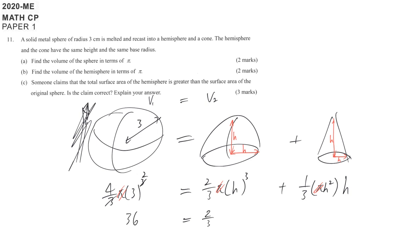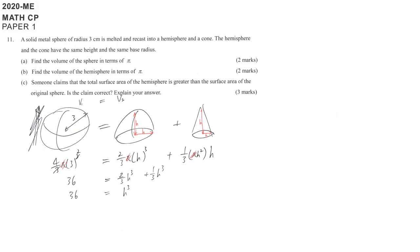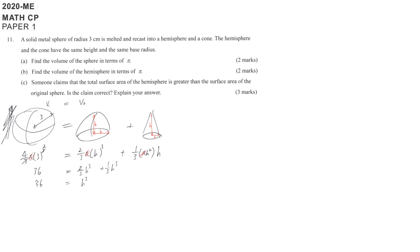Equals 2 over 3 h power of 3 plus 1 over 3 times h power of 3. So h power of 3 is 36. If you want, you may also get h. h is equal to cubic root of 36.